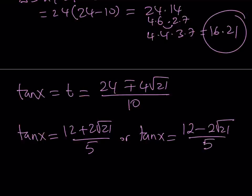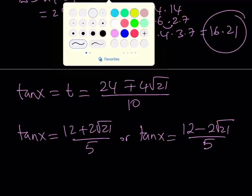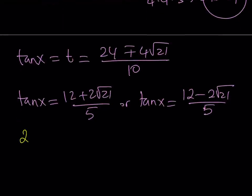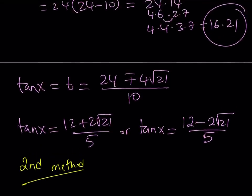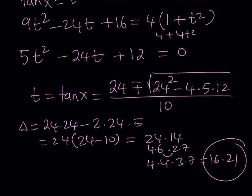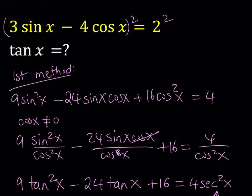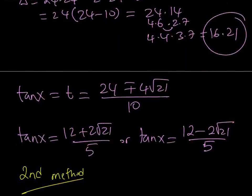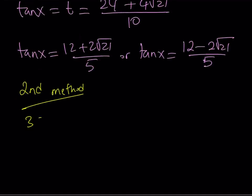Obviously, these values need to be checked, but let me tell you that they do verify. The reason why we check is because we squared both sides, which could introduce extraneous solutions. Let's talk about the second method now. Our second method involves some interesting transformations. Let's take a look at the original problem one more time. We have 3 sine x minus 4 cosine x equals 2.